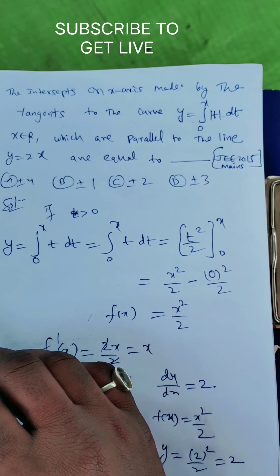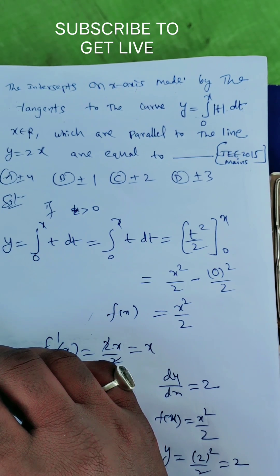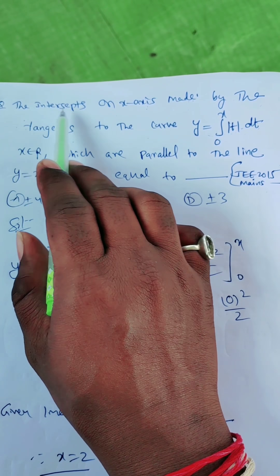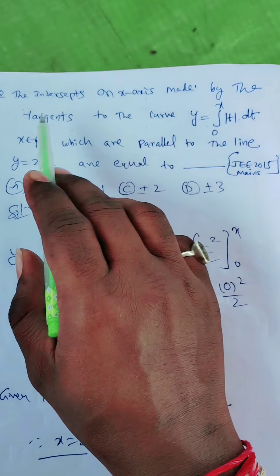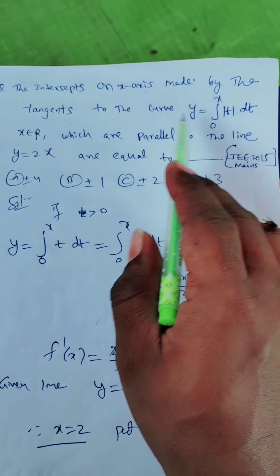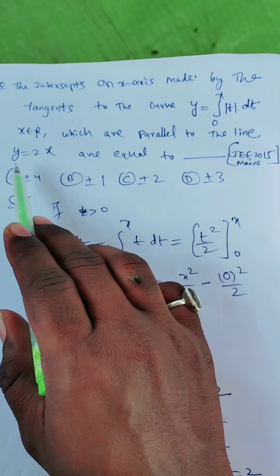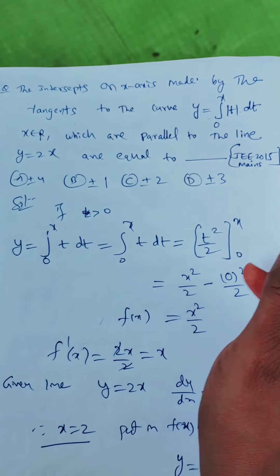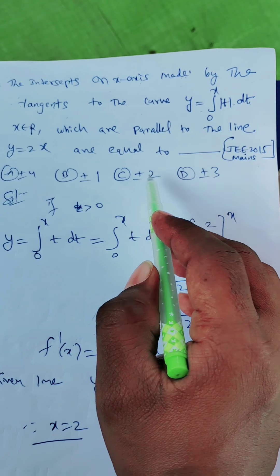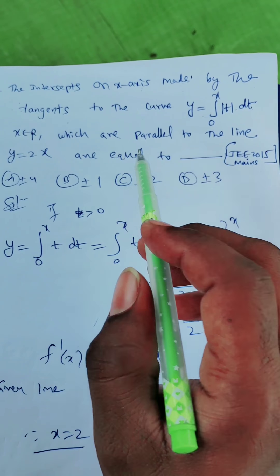My dear students, let us discuss a question asked in the year 2015 JEE Mains. The intercepts on the x-axis made by the tangent to the curve y equal to the integration from 0 to x of mod t dt, where x belongs to R, which are parallel to the line y equal to 2x. Options: plus or minus 4, plus or minus 1, plus or minus 2, plus or minus 3.